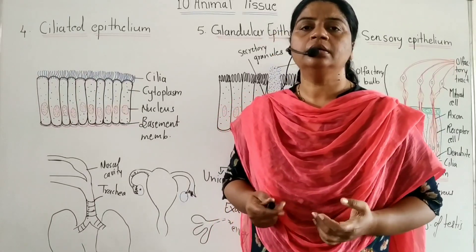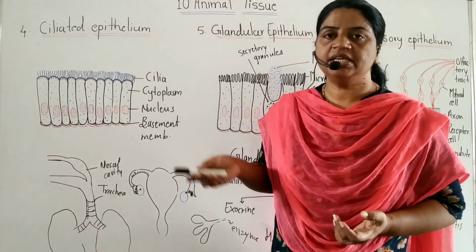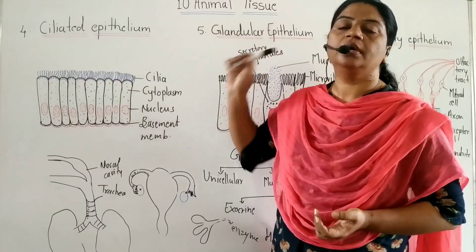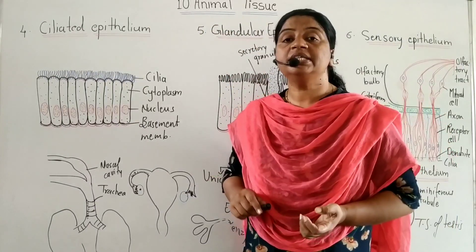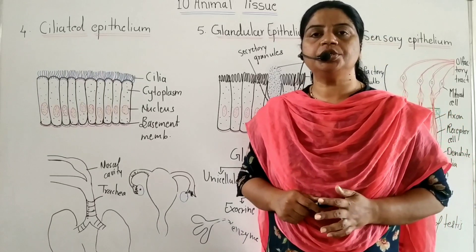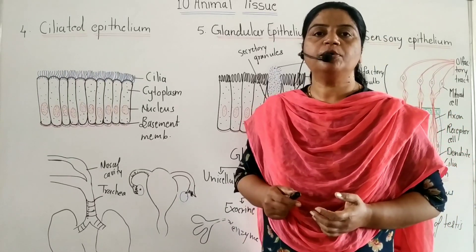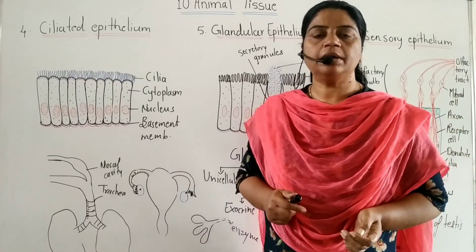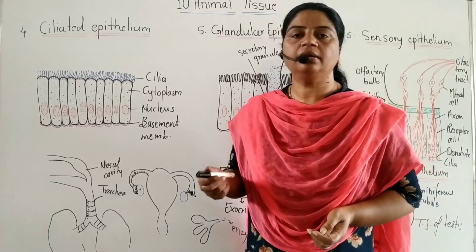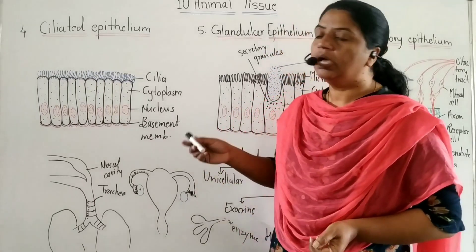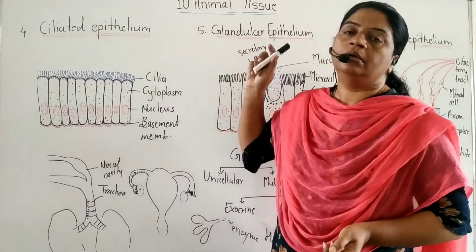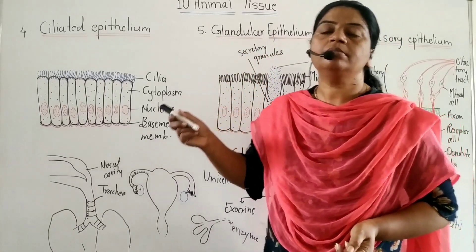Hello students. Here we will see the next topic of the 10th chapter, animal tissue — specifically the types of simple epithelium. In the last lecture we saw three types: squamous epithelium, cuboidal epithelium, and columnar epithelium. Here we will see ciliated epithelium, glandular epithelium, sensory epithelium, and germinal epithelium.